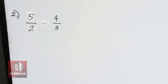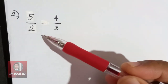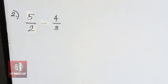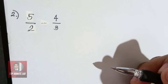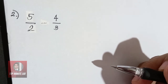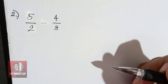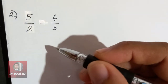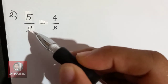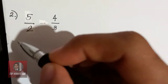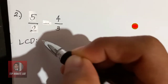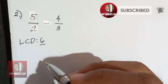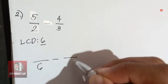Example number 2: 5/2 minus 4/3. First, we need to find the LCD. You can check the previous video for the process of finding the LCD. From this example, 2 and 3 have an LCD of 6. So it will become over 6 minus over 6.